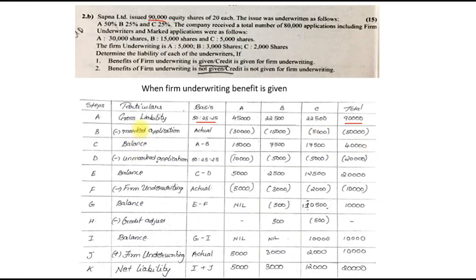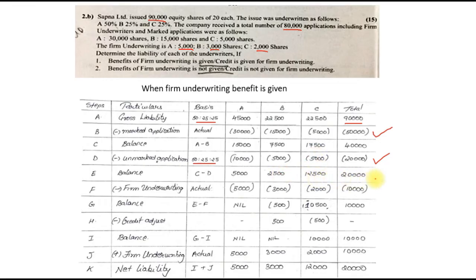After subtracting the marked applications, the next step is unmarked applications. The company received 80,000 applications including firm underwriting. Firm underwriting was 5,000 + 3,000 + 2,000 = 10,000, and marked applications were 50,000. So 80,000 minus 50,000 minus 10,000 gives 20,000 unmarked applications. That 20,000 is divided as per GL ratio 50:25:25, giving 10,000, 5,000, and 5,000. Subtracted, we get balance C minus D: 15,000 minus 10,000 is 5,000; 7,500 minus 5,000 is 2,500; 17,500 minus 5,000 is 12,500 — total comes to 20,000.